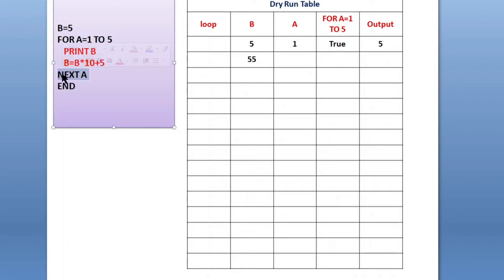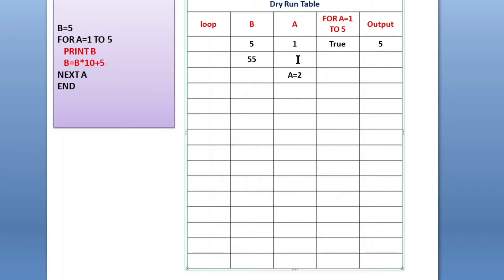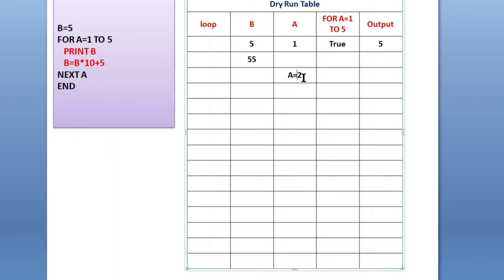After that, 'next a' — next a means a equals to a plus 1, so I will write in the next line a equals to 2, because initially value of a was 1. Next a means increment the value of a by 1: 1 plus 1 gives 2. Now a is 2. When we reach this line, the value of a is incremented and it gets back to the loop again.